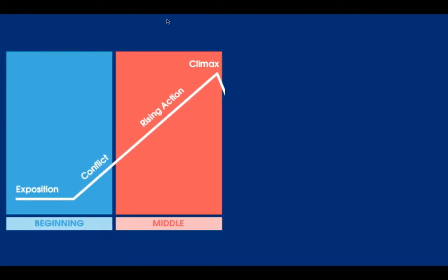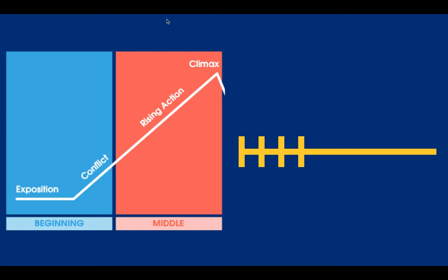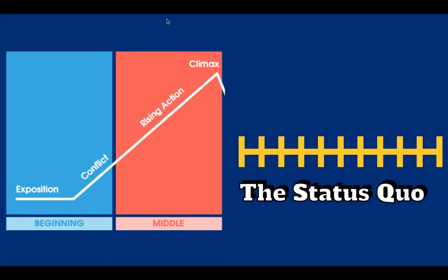Next, the pyramid has to go up. If it doesn't, it's just a list. For instance: I wake up, I have a coffee, I have a shower and get dressed, I go to work, I come home, I read, I work out, I watch some TV, I have dinner, I go to bed. That's just a list of events — a straight line. For it to go up, something has to happen. This normal everyday life is called the status quo: normality.